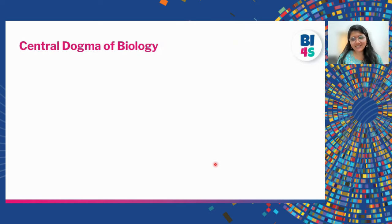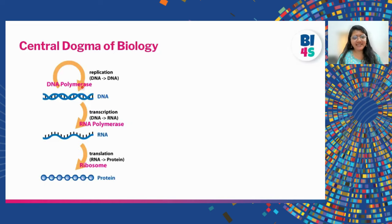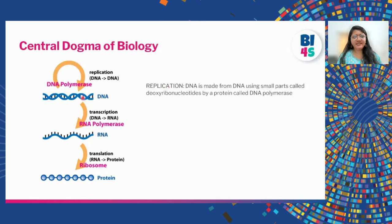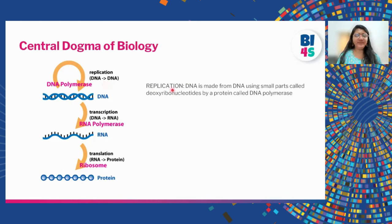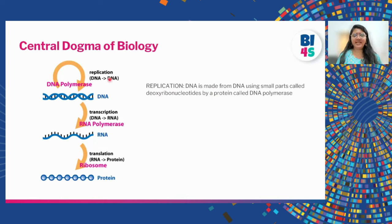Like a factory, the cell has rules, and that is called the central dogma of biology: DNA makes RNA, which makes protein. The first step is replication — how DNA makes more copies of itself. More DNA is made from deoxyribonucleotides (A, T, G, C) by a protein called DNA polymerase.